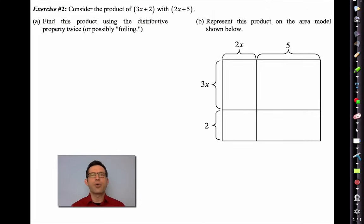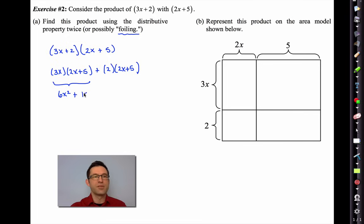When we look at a product like (3x + 2) times (2x + 5), it's very similar to multiplying 32 by 25. We have to make sure that everything inside of this parentheses, 3x + 2, all terms inside of this parentheses, multiply all terms within this parentheses. Find this product using the distributive property twice or possibly foiling. What we mean by using the distributive property twice is that the first thing I'm going to do is I'm going to distribute the 3x times (2x + 5), and I'm also going to distribute the 2 to the (2x + 5).